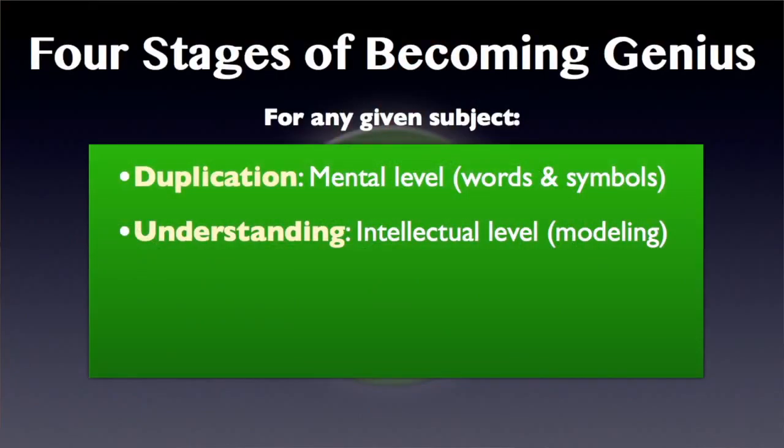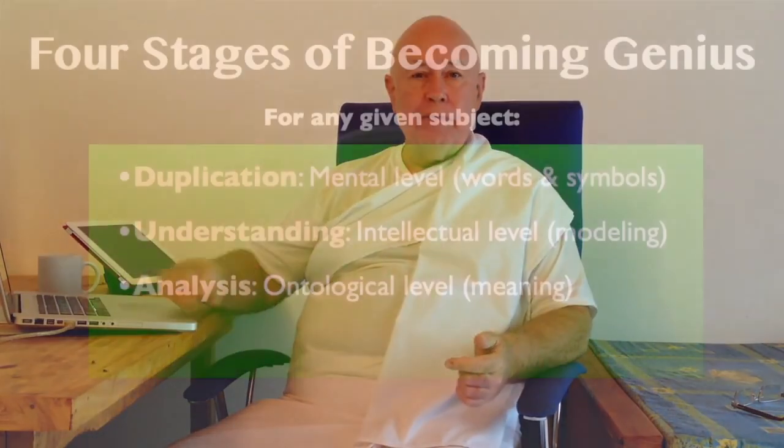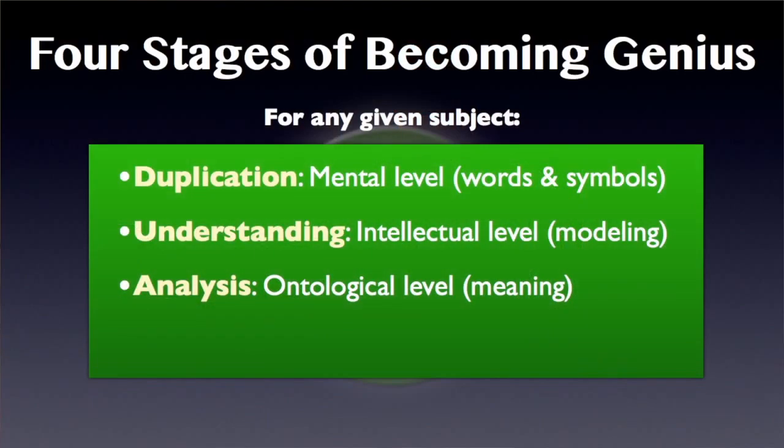The next stage, understanding, is on the intellectual level. This is where intelligence comes in. Modeling requires intelligence, because you have to see the meaning of all these words and symbols you've taken in and duplicated. How does this actually work? When I tweak over here, what happens on the other end? What is the relationship of cause and effect? What controls what? What actually does the work here, and how does it work? This gets into the next stage: analysis.